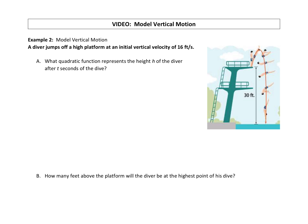Our last example had the quadratic function modeling area. Now we're going to model vertical motion. In this example, a diver jumps off a high platform at an initial vertical velocity of 16 feet per second. This is our vertical motion model that we saw in our vocab video. Let's write out what that vertical motion model function is: h of t equals negative 16t squared plus our initial velocity times t plus our initial height.